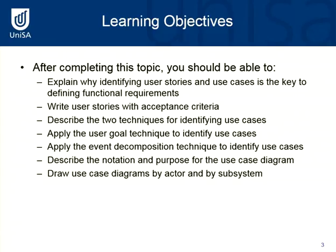What are the business processes involved? What does the system actually have to do? We write user stories with acceptance criteria, then look at use cases and use case diagrams. You'll need to create a use case diagram as part of your second assignment. Last week we looked at activity diagrams to model business processes or workflows — this week it's use case diagrams, which help us define the functional requirements.